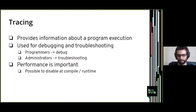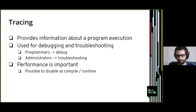For instance, if you are developing an application and something is not working, you can use tracing to know what is going on — for example, what functions are being called and what their arguments are. An administrator can use tracing for troubleshooting: if there is a performance problem, the administrator can enable tracing and get details about what is happening. Performance in tracing is very important because we want the overhead to be as low as possible.